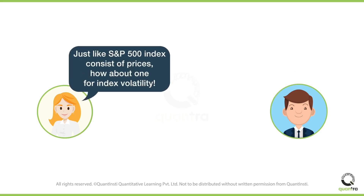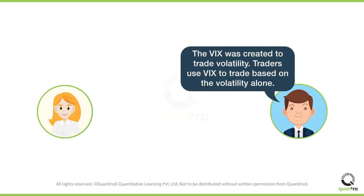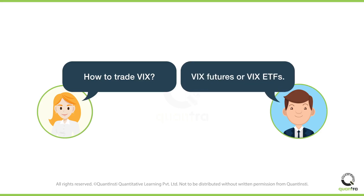So it would be quite difficult to only trade volatility through S&P 500 index options. If we have an index for trading in US stocks such as S&P 500, why not have an index for trading volatility? The VIX was created to trade volatility. It is created for those traders who know about volatility and would like to trade based on the volatility alone. VIX is a volatility index. You can trade in VIX using derivatives such as VIX futures or VIX ETFs. By buying and selling VIX futures or VIX ETFs, you are trading based on your view of S&P 500 volatility only.